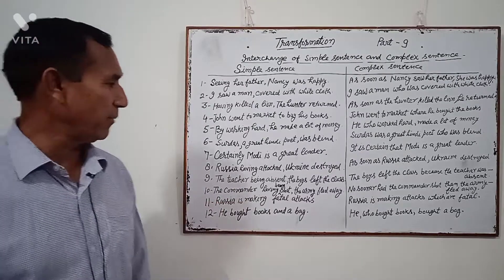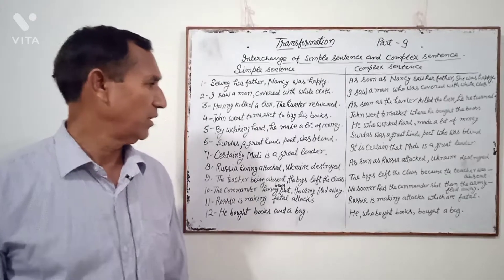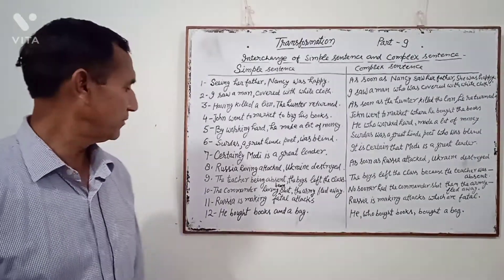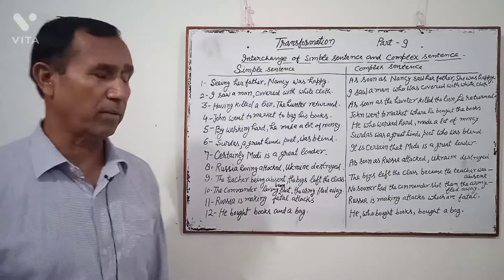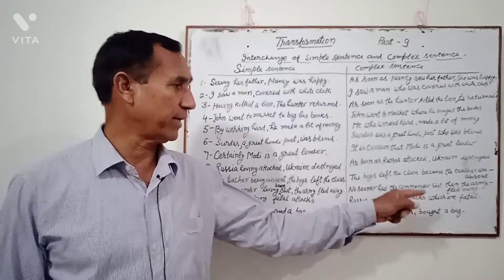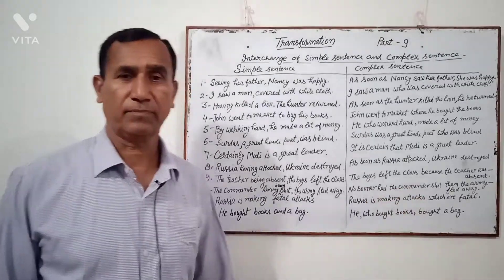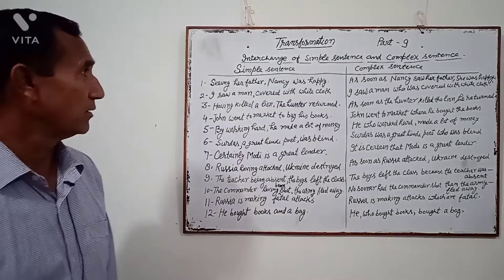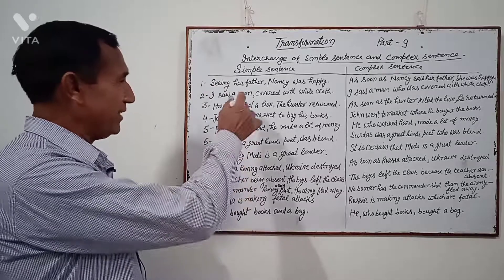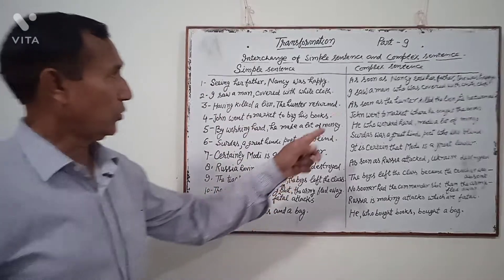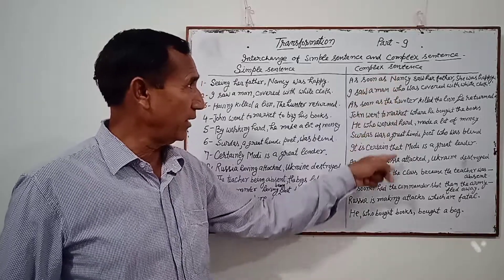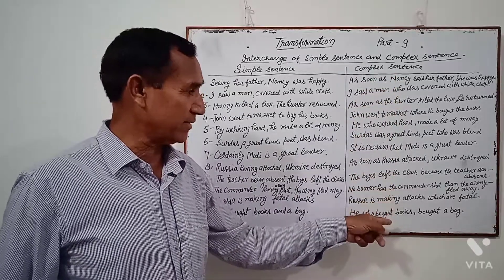Ninth example: "Russia is making fatal attacks." Complex: "Russia is making attacks which are fatal." Tenth example: "He bought books and a bag." Complex: "He who bought books bought a bag." In this way, these simple sentences are transformed into complex sentences.